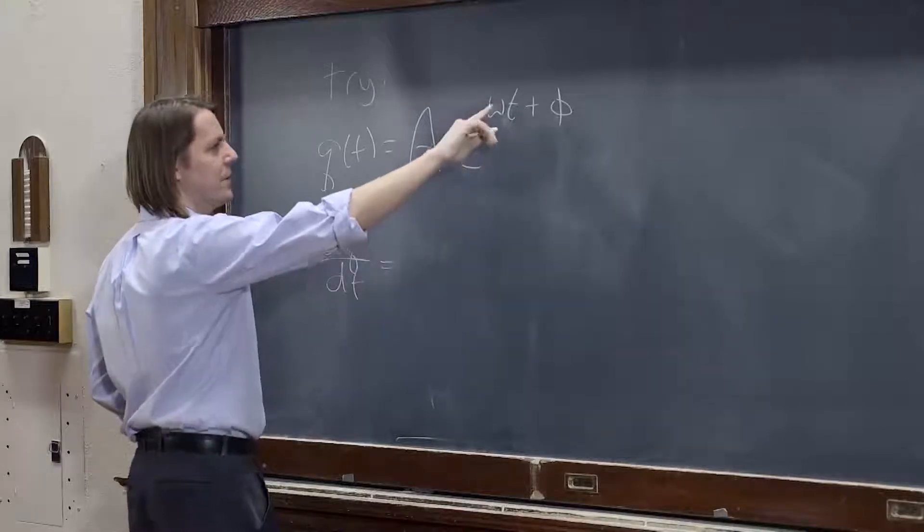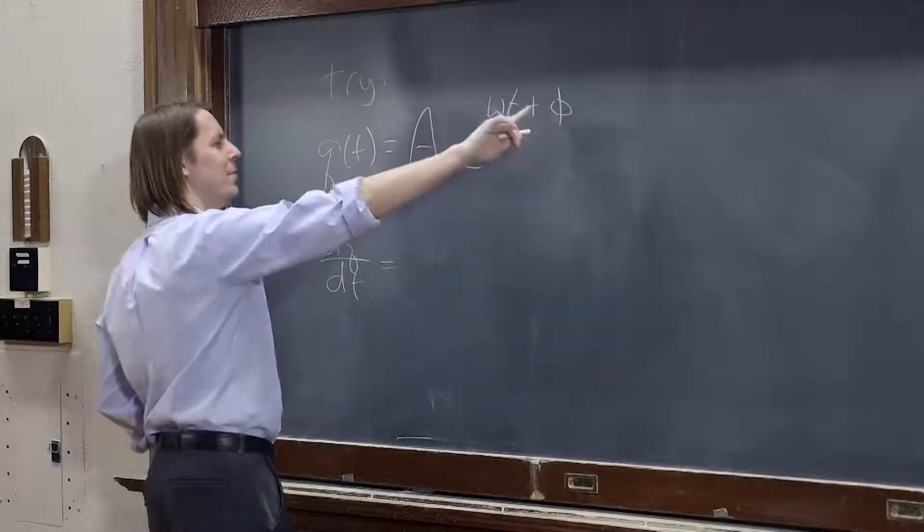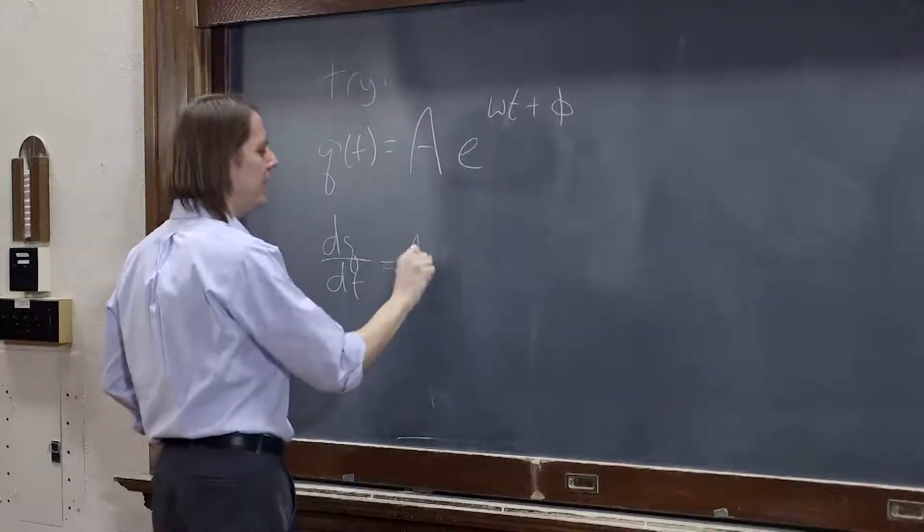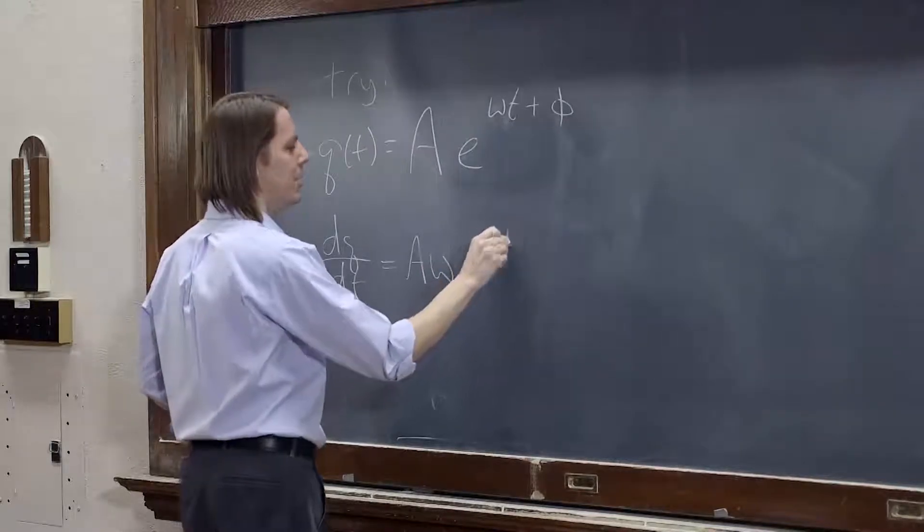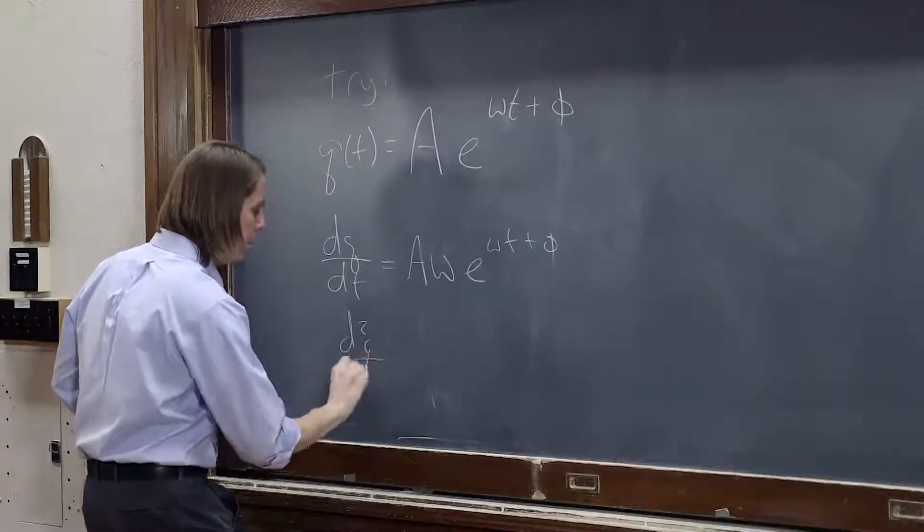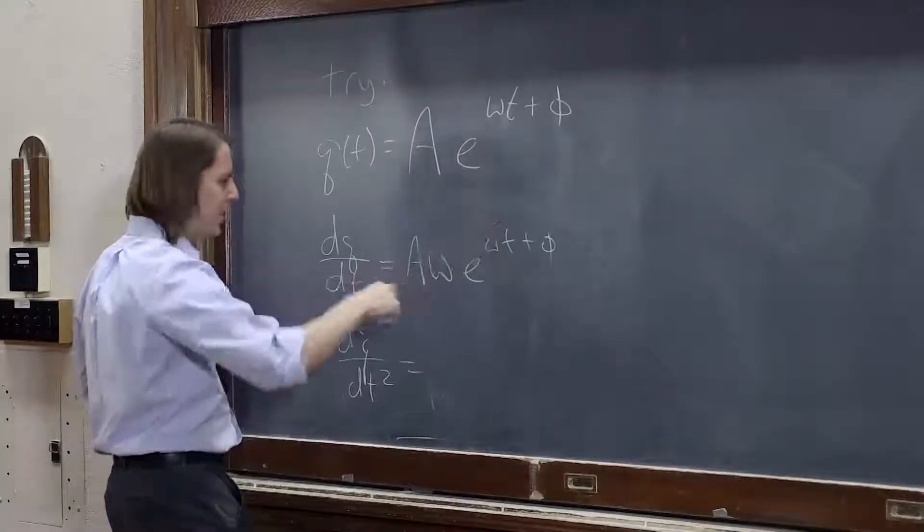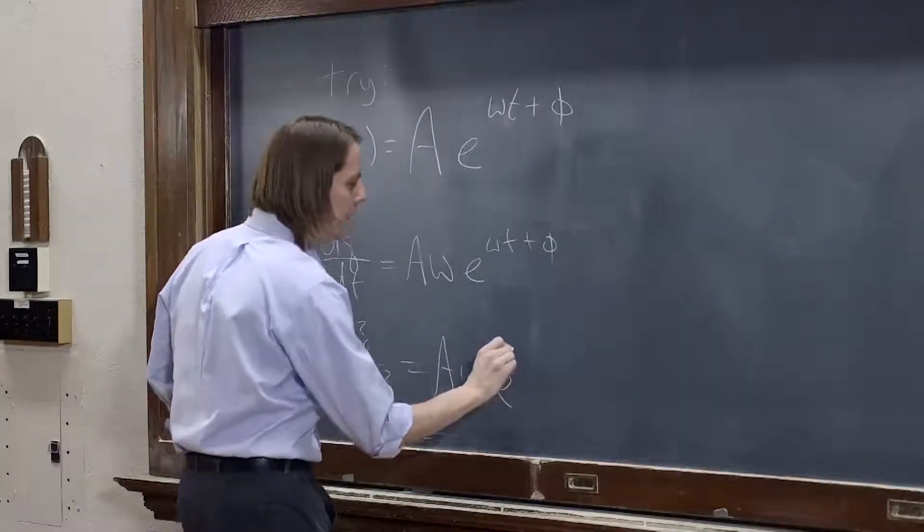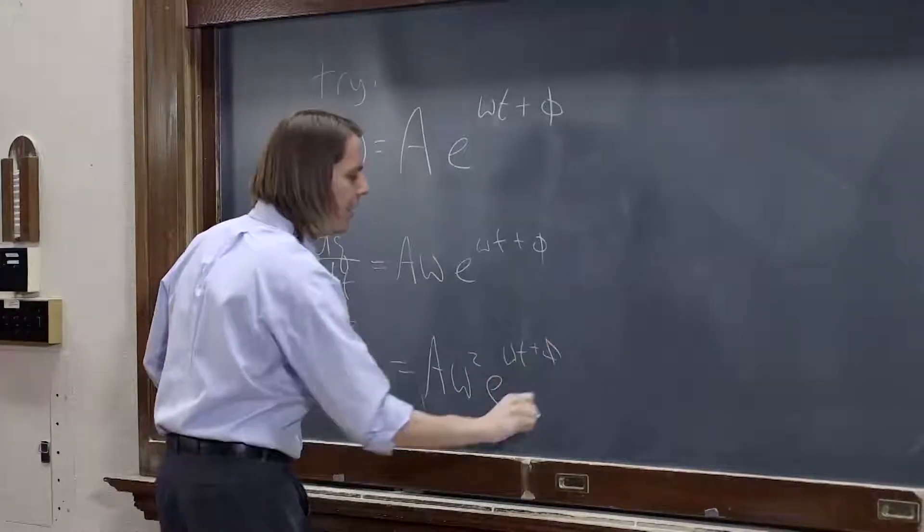Well, the exponent just stays the same but you pull down the derivative of this with respect to time, so it's a omega e to the omega t plus phi, and the second derivative you pull just down another omega, a omega squared e to omega t plus phi.